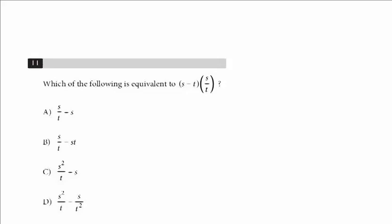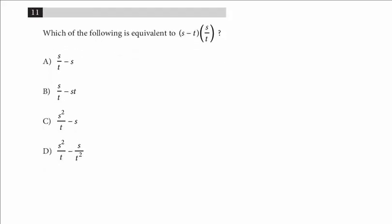And we've got one more advanced math concept. It's question number 11. Which of the following is equivalent to this equation? So here we've got a quantity s minus t times s over t.